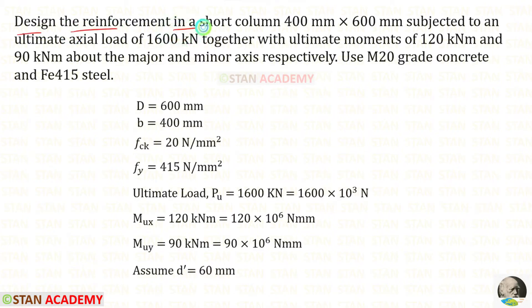Design the reinforcement in a short column 400 mm × 600 mm. D is given as 600 and B is given as 400. Subjected to an ultimate axial load of 1600 kN. The ultimate load Pu is given in kilonewton, we can convert that into newton. Together with ultimate moments of 120 kNm and 90 kNm about the major and minor axis respectively. The moment in the major axis Mux is given in kilonewton meter, we can convert that into newton millimeter. The moment in the minor axis Muy is given in kilonewton meter, we can convert this also into newton millimeter.